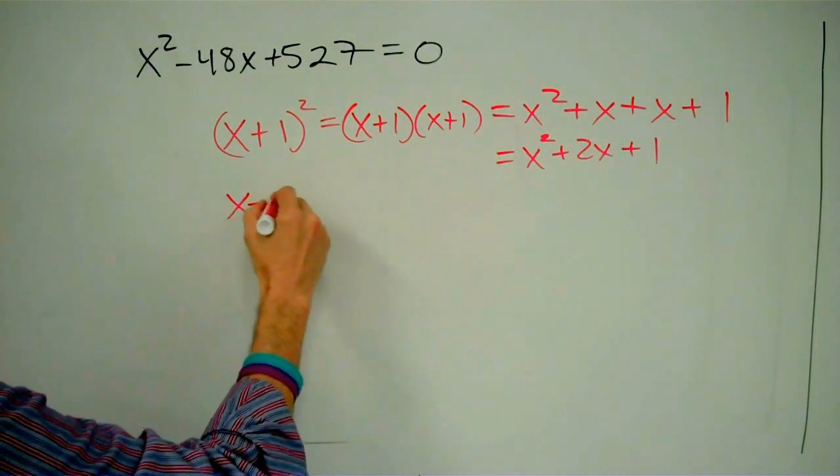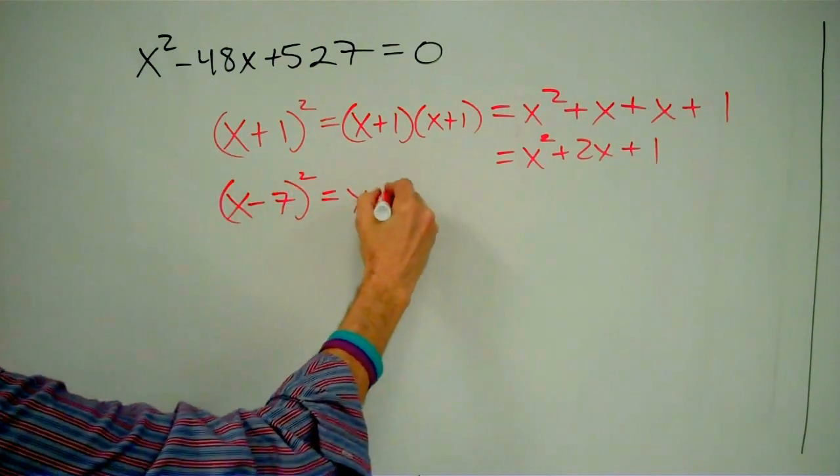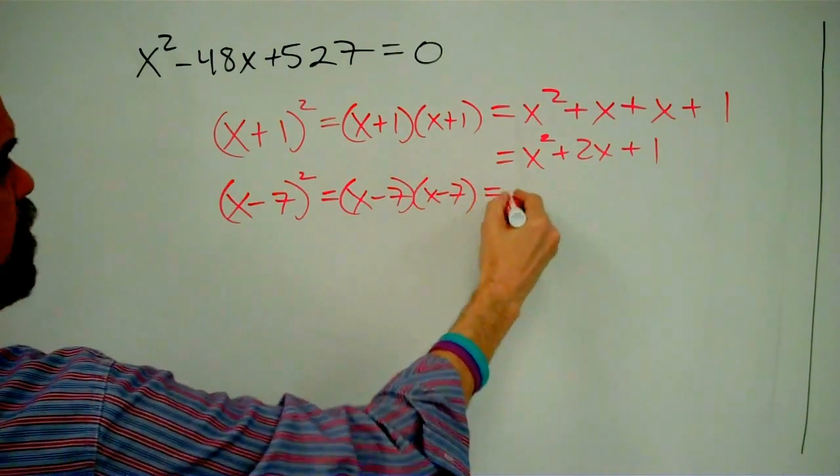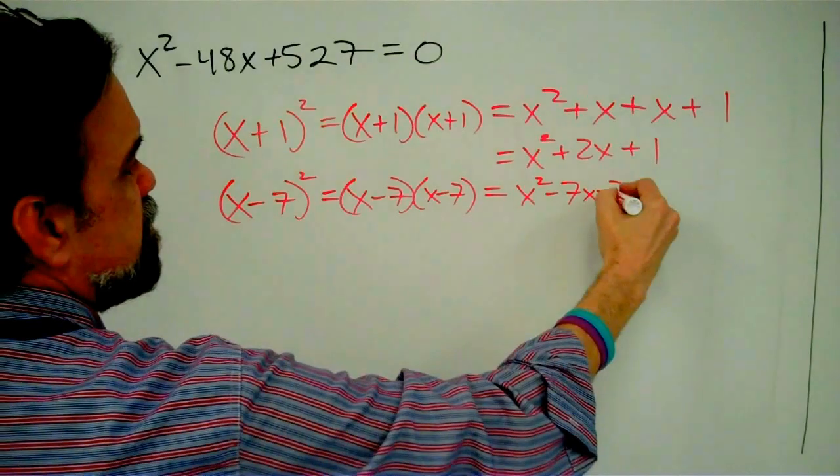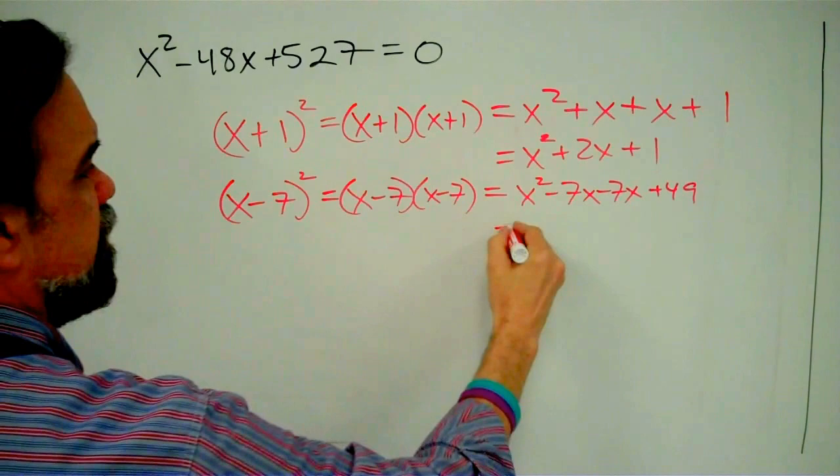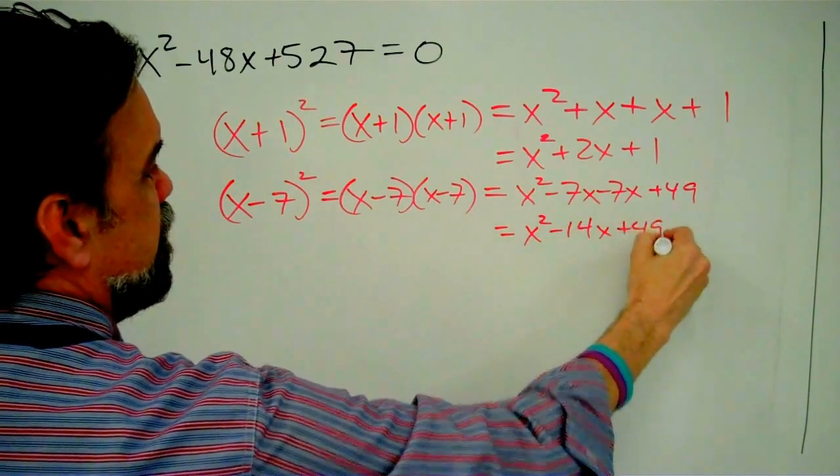Let's look at (x - 7)². That's (x - 7) times (x - 7), which ends up being x² - 7x - 7x + 49, and that's x² - 14x + 49.